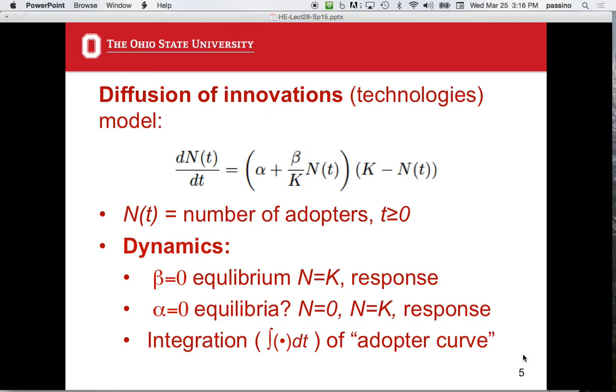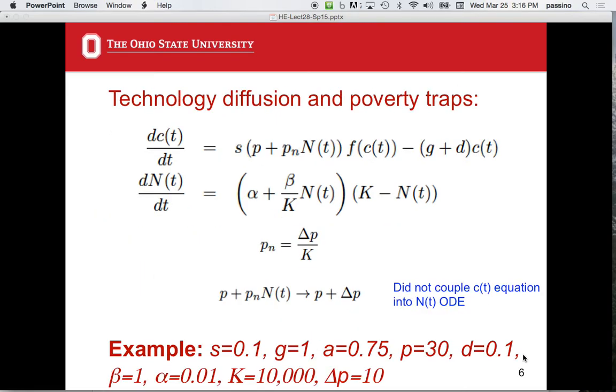Here's the thing. I want to link these together. So I want to now study the impact of technology diffusion on capital. So remember our equation right here. There's a difference. I've got, rather than P here, if you let Pn equal 0, this is the same as what we had before. Instead, what I'm going to do is I'm going to take Pn, that's a constant, multiplied by N of T, and I'm going to add it to P, and then I'm going to put that in my money equation.